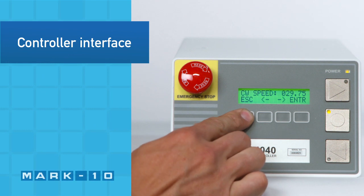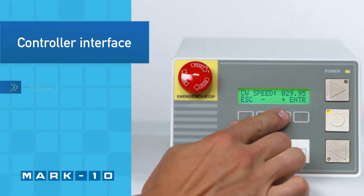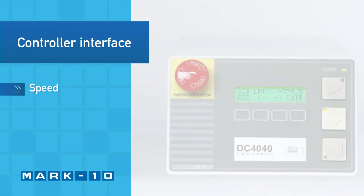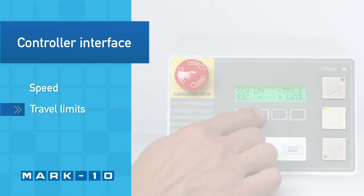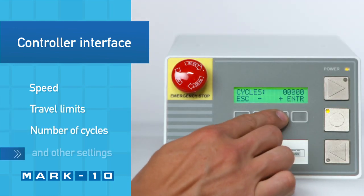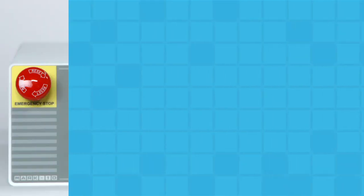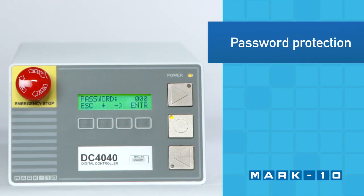Utilizing the simple controller interface, set up test parameters such as speed, angular travel limits, number of cycles and other settings. Password protect the menu to prevent unauthorized changes.